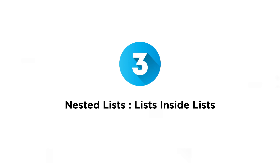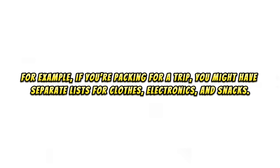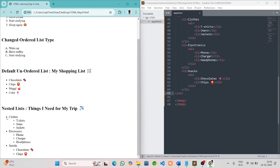And also one more list type: nested lists — lists inside lists. Sometimes we need subcategories inside a list. For example, if you're packing for a trip, you might have separate lists for clothes, electronics, and snacks. Here's how you can create a nested list in HTML.